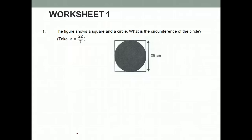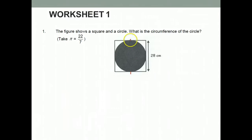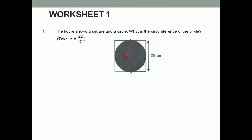The figure shows a square and a circle. What is the circumference of the circle? We know that the circumference of the circle actually touches the side of the square. From one side of the circle to the other side, passing through the center, we know that this is called the diameter. So from here we know that our diameter is 28 cm.